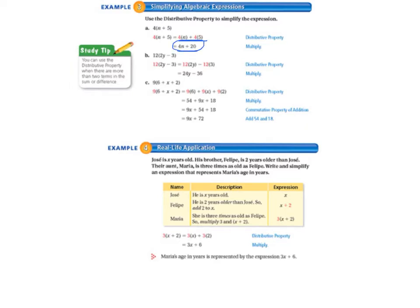Letter B, we're doing the same thing. We're multiplying the 12 times everything in the parentheses. So 12 times 2y minus 12 times 3 equals 24y minus 36. Letter C, 9 times 6 plus x plus 2 equals 9 times 6 plus 9 times x plus 9 times 2. The 9 gets multiplied by everything inside the parentheses. 9 times 6 is 54 plus 9x plus 18. Then we can simplify that further by using our commutative property of addition and moving the 54 plus 18 next to each other and adding those two together to get 72. So we end up with 9x plus 72.